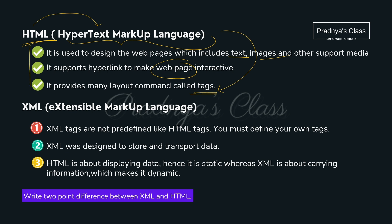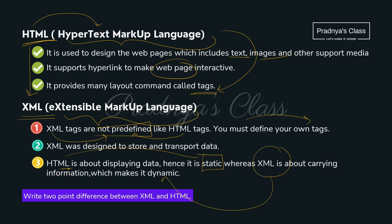There is one more type of markup language: XML — Extensible Markup Language. In HTML we have predefined tags, but in XML there are no predefined tags — we can define our own tags. HTML displays static data, but with XML you can design dynamic content. Remember these two differences as you may get a question like this.